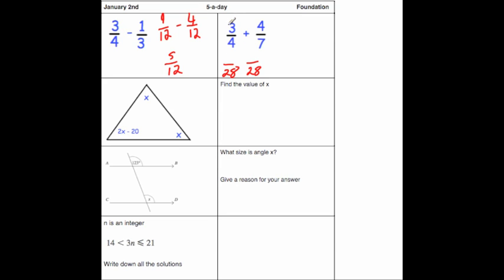Multiplying both the numerator and denominator of 3 quarters by 7 would give us 21 20ths. And multiplying both the numerator and denominator of 4 7ths by 4 would give us 16 20ths.